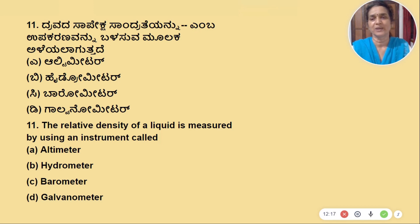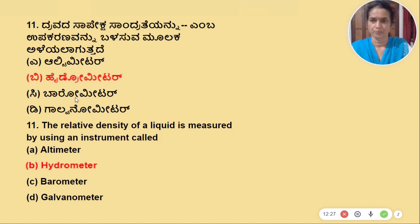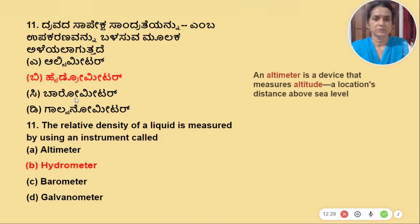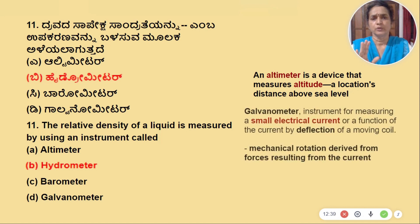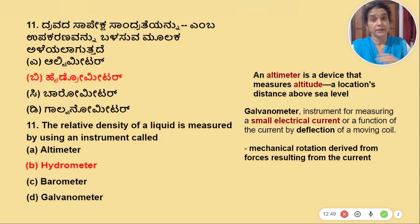Altimeter, hydrometer, barometer, galvanometer — the relative density of a liquid is measured by using an instrument called a hydrometer. Hydrometer is the answer.